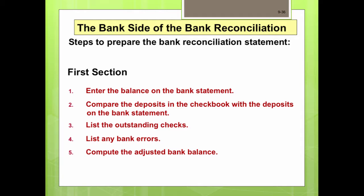To prepare the first section of the bank reconciliation: enter the end-of-month bank statement balance, compare deposits in the checkbook with deposits on the bank statement, then list the outstanding checks. If the bank has incorrectly debited an account or omitted any other items, list those errors as well. Finally, compute the adjusted bank balance.